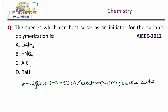Now of the given options, if I am taking LiAlH4, that is lithium aluminium hydride, it is not an electron deficient species. It gives out hydride ion. So it is not the correct option.